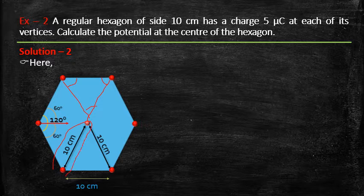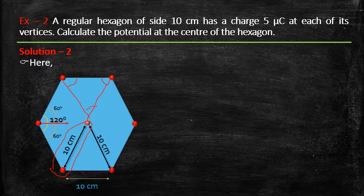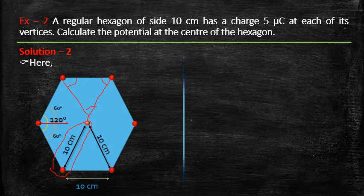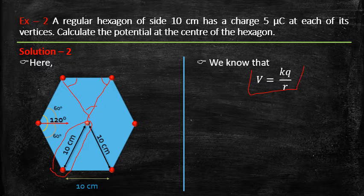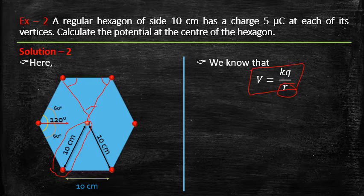The potential at the center due to a single charge is kq/0.10 m, where q = 5 microcoulombs. Convert the distance to meters, calculate the potential due to one charge, then multiply by 6 to get the total potential due to all six charges.